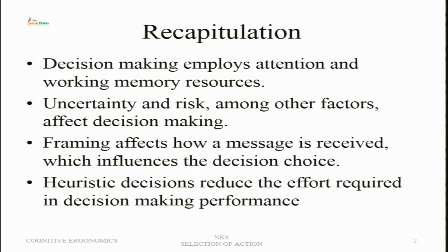Thus far we have talked about most of the processes in the information processing model — right from the sensory processes to perception, attention, memory and decision making. After a decision has been made to influence the environment or take certain action, what action should be selected? What are the alternatives available? We are toward the end of the information processing model.